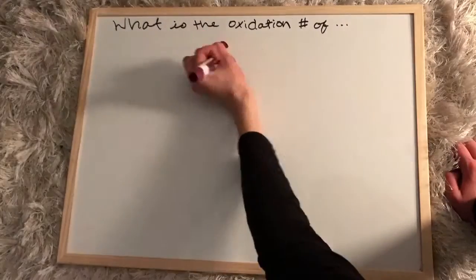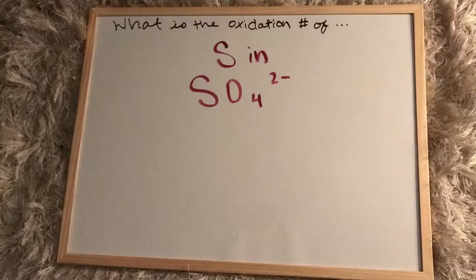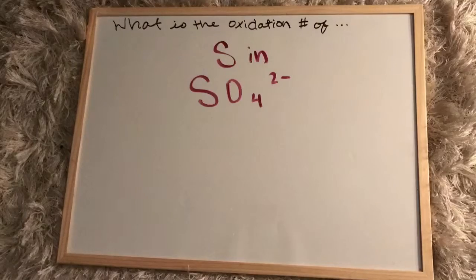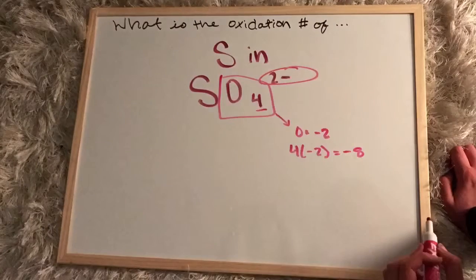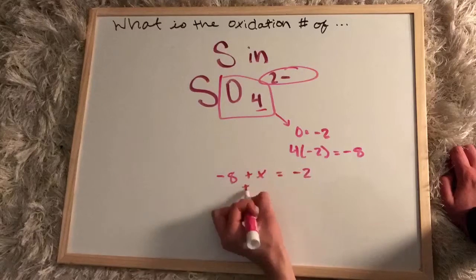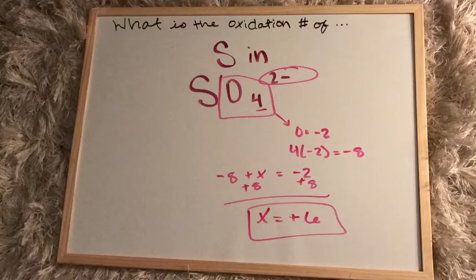This next example is a polyatomic ion, but we'll start out the same way. We start with the oxygen and find that it's negative eight, but since the charge of the ion is negative two, we need to set up the algebra a bit differently. So negative eight plus x equals negative two this time, and we figure out that the oxidation number of sulfur is positive six.